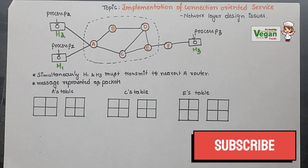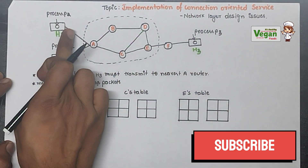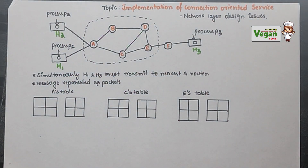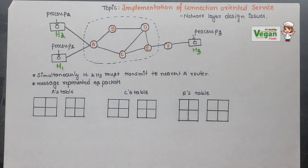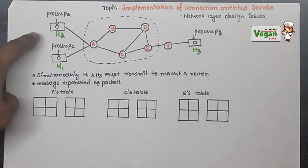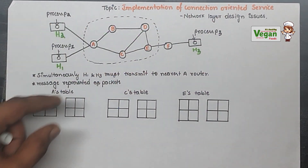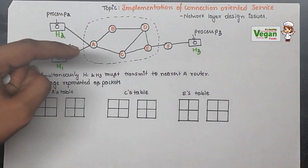In this video, let's discuss the implementation of connection-oriented service. Between the source and the destination there is a virtual circuit. If we consider Host 1 and Host 2 as the source and Host 3 as the destination, this is the virtual circuit — it cannot be seen by the naked eye. These two hosts will send information in the form of packets, as in the network layer.